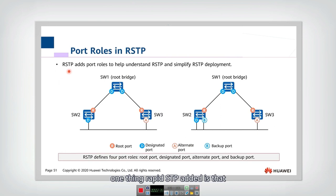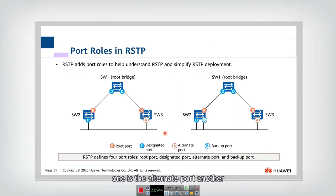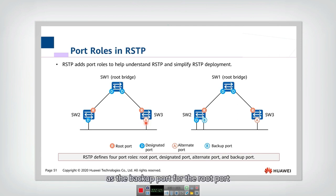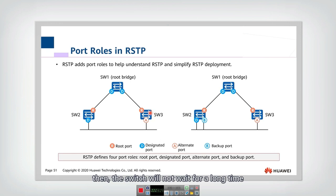One thing Rapid STP added is two more port roles than STP: the alternate port and the backup port. If a port is not the root port or designated port, then it is the alternate port. You can think of the alternate port as the backup for the root port. In RSTP, if the root port failure happens, the switch will not wait for a long time — it will directly change the alternate port to become the root port.